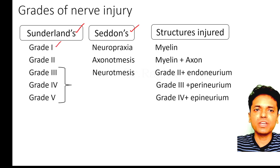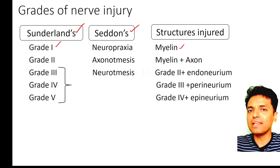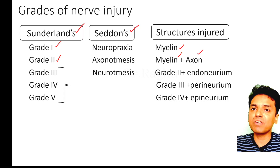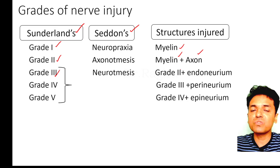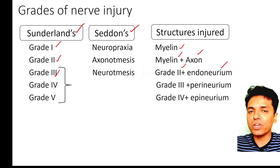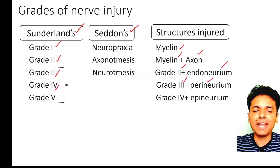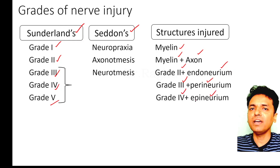In Sunderland's classification: Grade 1 involves injury to the myelin sheath only. Grade 2 involves injury to myelin as well as axon. Grade 3 involves axon, myelin, plus endoneurium. Grade 4 encompasses Grade 3 plus perineurium injury. Grade 5 includes Grade 4 plus the epineurium.